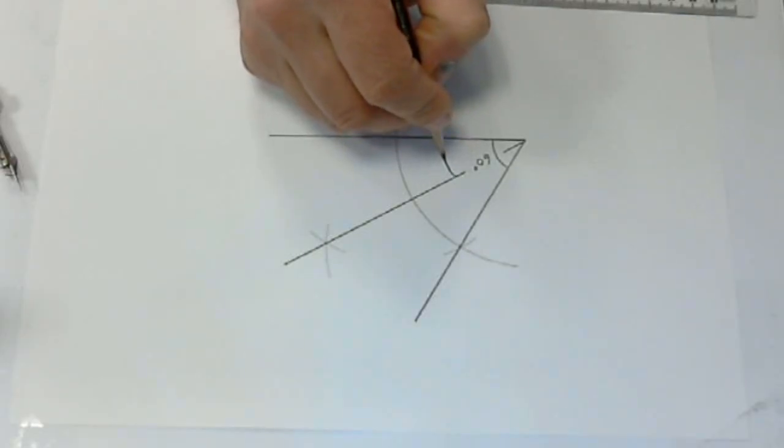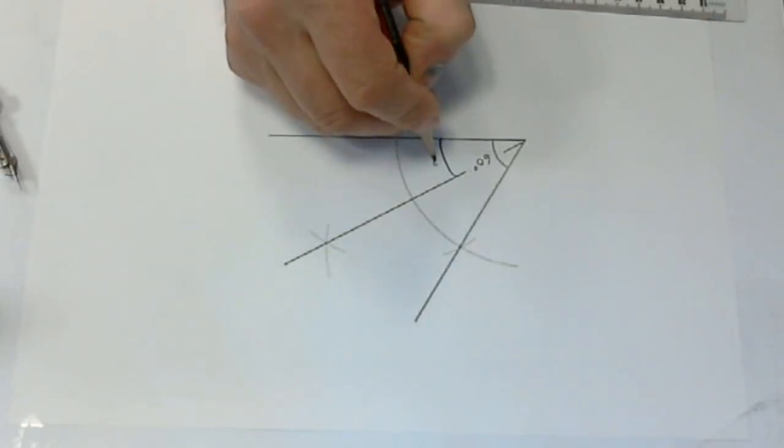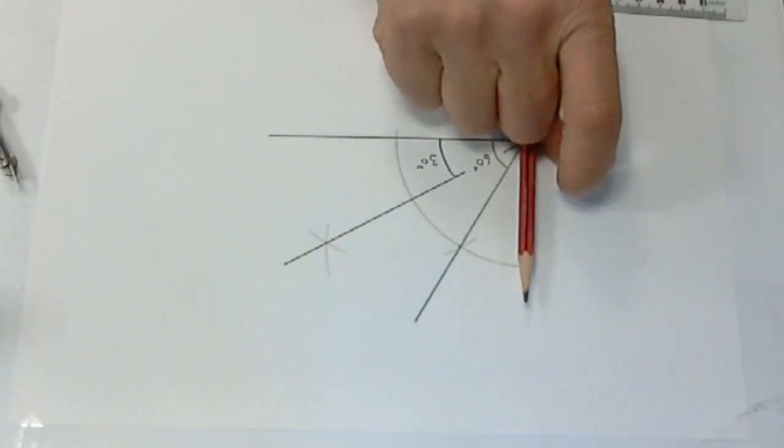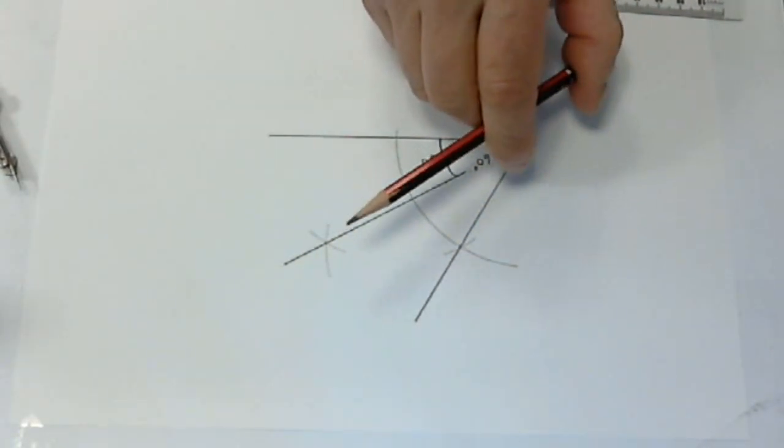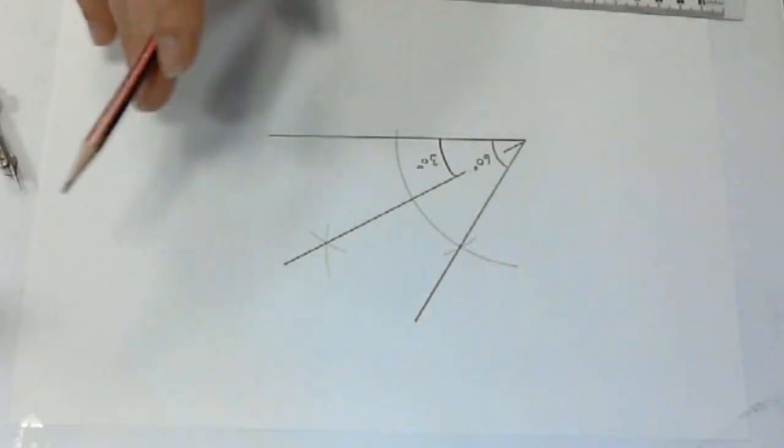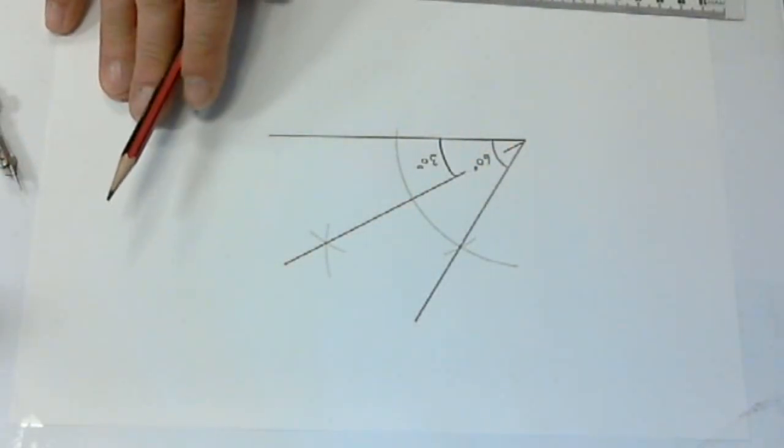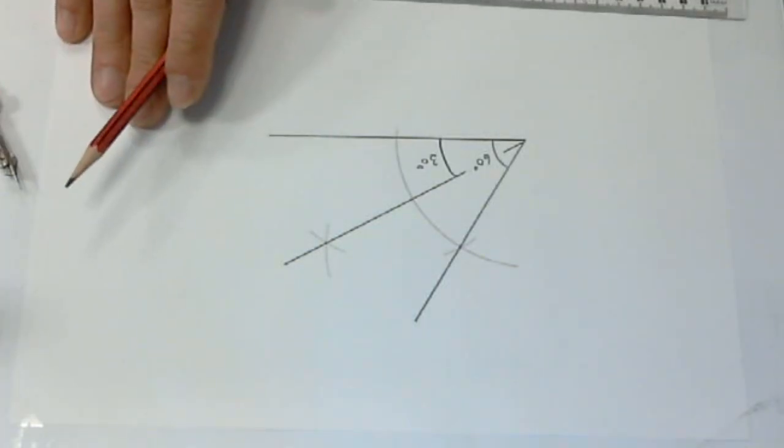That angle will be at 30 degrees. Had we started with a 90-degree angle, we could use the same process to create 45 degrees, and then divide the 45 to create a 22.5-degree angle, and so on. That's it.